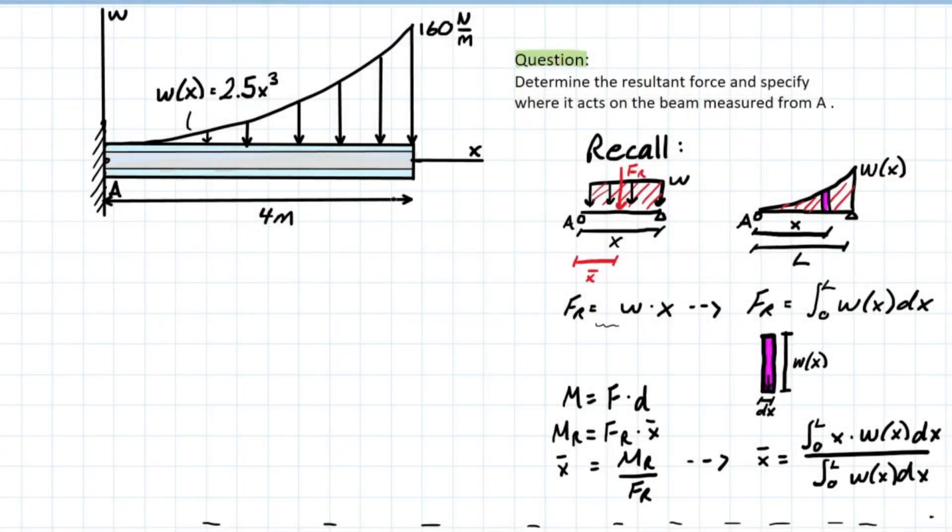Hello everybody, let's try to solve this problem where we have the distributed load as a function of x. So what does that mean? It means that as you go further along the span of the beam, your distributed load value is going to change based on the function and based on the distance you are from a specific point.